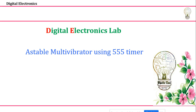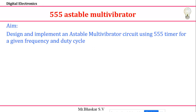Last class we discussed the internal structure of the astable multivibrator using the 555 timer — how it works and how to set the duty cycle. Now I'm going to take an example, construct it, and verify whether the values are correct. The aim of the experiment is to design and implement an astable multivibrator circuit using the 555 timer for a given frequency and duty cycle.